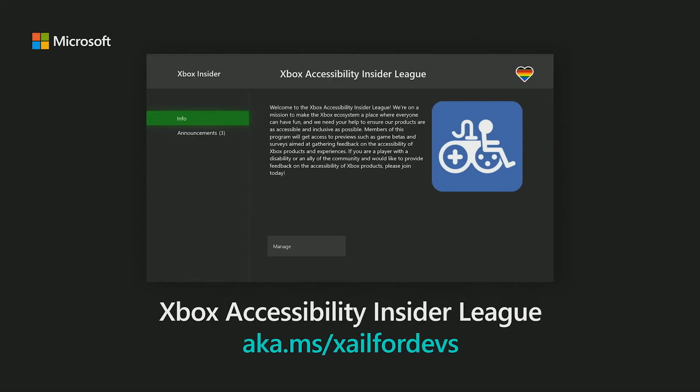The Microsoft Gaming Accessibility Testing Service is just one of many ways you can get feedback from the gaming and disability community. As community engagement is important both before and after a title releases, Microsoft has created the Xbox Accessibility Insider League, otherwise known as XAIL, to give game developers another method of soliciting feedback from gamers with disabilities. Information on the program can be found at aka.ms/xailForDevs.